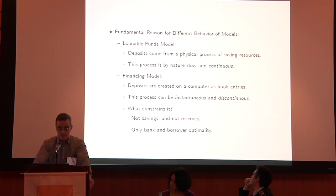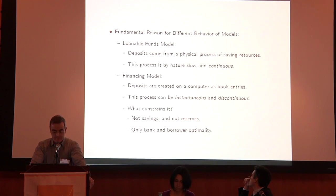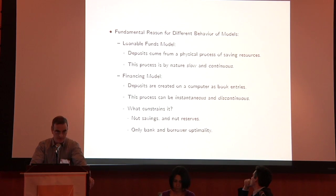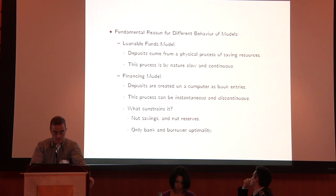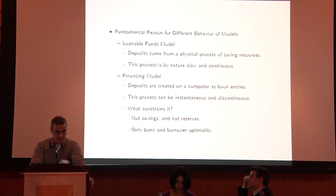These models behave very differently. In the loanable funds model, deposits come from a physical process of saving resources, which is a slow process. Unless you assume linear preferences — an extreme assumption — saving resources cannot be an extremely fast and discontinuous process. In the financing model, deposits are created on a computer as book entries, and this can be instantaneous and discontinuous. What constrains this process is not savings — many models talk about savings being channeled through banks, but savings do not constrain what banks do. Reserves also do not constrain what banks do during normal times: when a central bank targets interest rates, reserves are endogenous and are not a constraint.